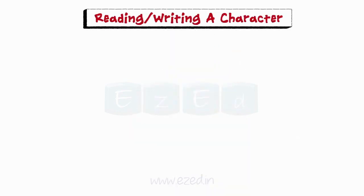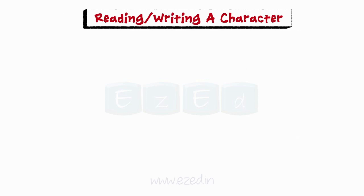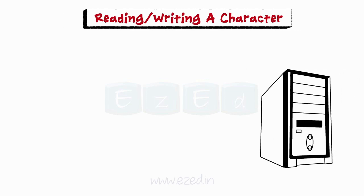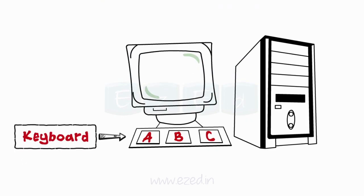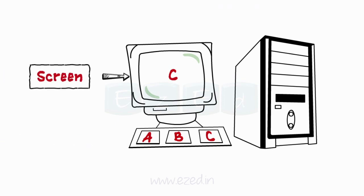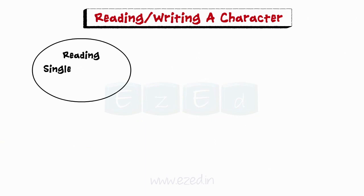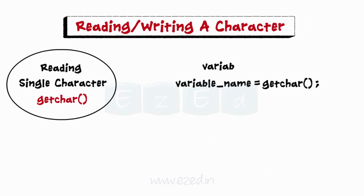Let's first understand how a character is read and displayed on the terminal screen in C. The simplest of all I/O operations is reading of a character from the standard input device, which is a keyboard, and writing a character to the standard output device, that is the screen. Reading of a single character is done through the getChar function. Here, variable_name is a valid C type variable declared as char.